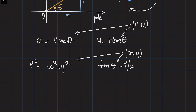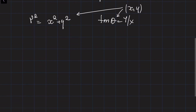So in this lecture, we're going to describe curves — how we can describe curves like circles, lines, cardioids, or four-leafed curves in polar coordinates.